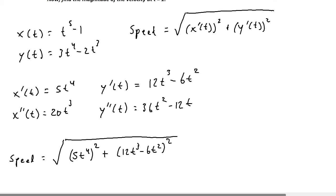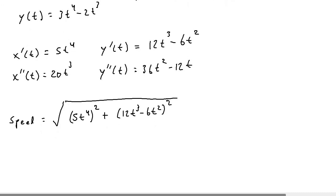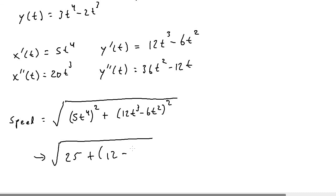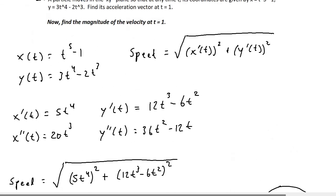It's easier to plug in t equals 1 first rather than squaring the terms. Plugging in: 5 times 1 to the fourth is 5, and 5 squared is 25. Then 12 times 1 cubed is 12, minus 6 times 1 squared is 6, giving us 6, and 6 squared is 36. So we get the square root of 25 plus 36, which is the square root of 61. That is the exact answer for the magnitude of the velocity, or speed, at time t equals 1.